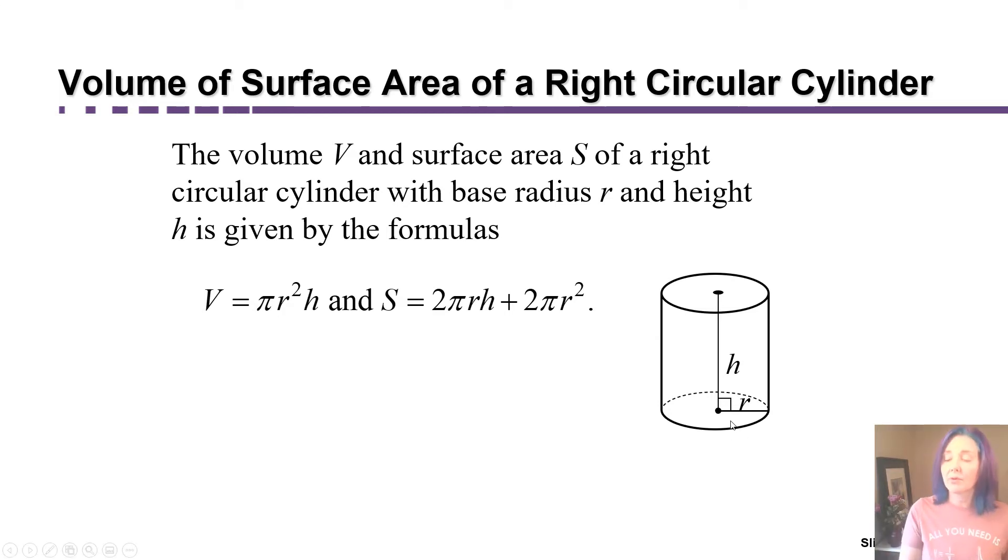It just so happens that for a right circular cylinder, the area of the base is the area of a circle. Well, if it's a circle of radius r, the area of the base is pi r squared. I'm just going to give it the name capital B for area of the base. So we know the volume of the cylinder is the area of the base times the height, which is exactly why the formula for the right circular cylinder looks like volume equals pi r squared h, the area of the base times the height.